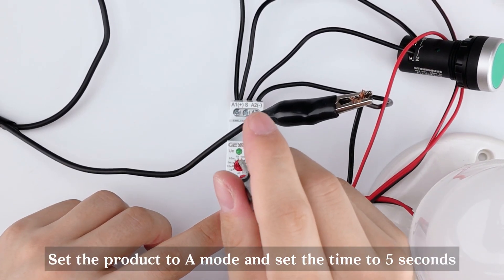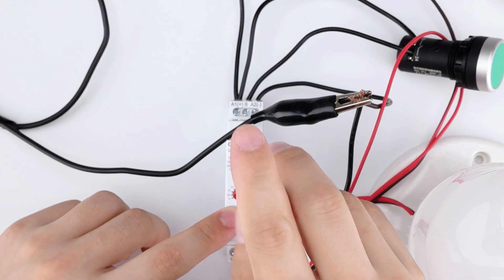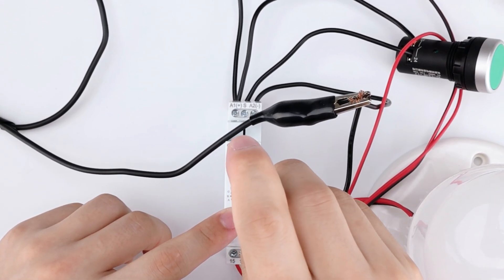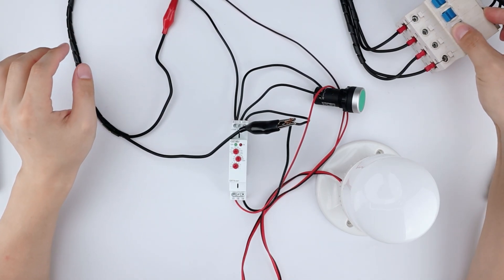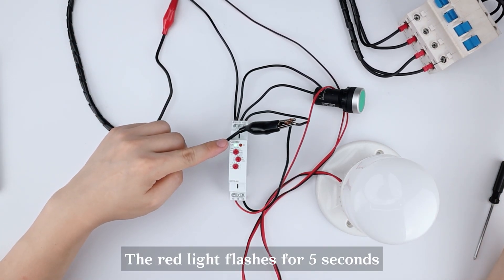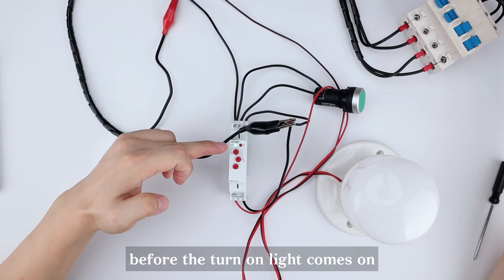Set the product to E-Mode and set the time to 5 seconds. Turn on electricity. The red light flashes for 5 seconds before the turn-on light comes on.